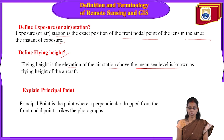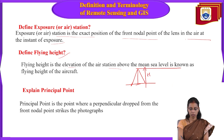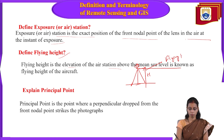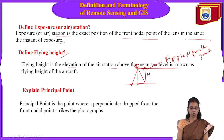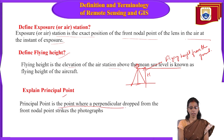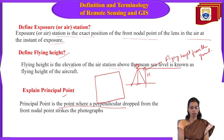The flying height of the aircraft above mean sea level is denoted as the elevation. The principal point is the point where a perpendicular drawn from the front nodal point strikes the photograph. Each aerial photo has fiducial marks; when you join them, the center point obtained is the principal point.